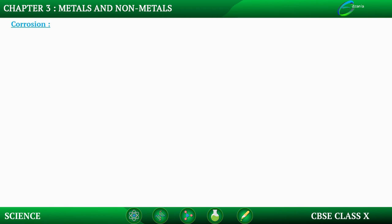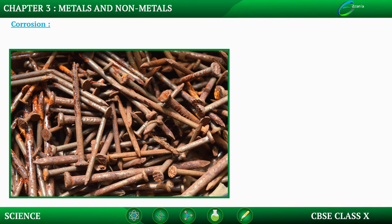Let us start with a new topic: corrosion. You might have seen that whenever nails are kept outside for a really long time they become rusty, or even if your cycle is outside and comes in contact with water it becomes rusty. Anything made up of iron becomes rusty when it comes in contact with water. Similarly, copper reacts with moist carbon dioxide in the air and slowly loses its shiny brown surface.